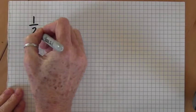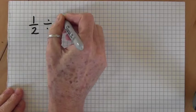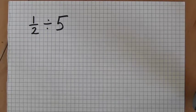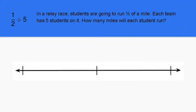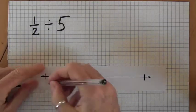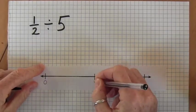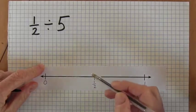One half divided by five — what does this mean? This type of problem is most easily conceptualized as partitive division. Here's an example: in a relay race, students are going to run one half of a mile, and each team has five students. How many miles will each student run? This problem lends itself to a number line. I'll mark zero, one, and one half, then think about dividing that half into five equal parts.